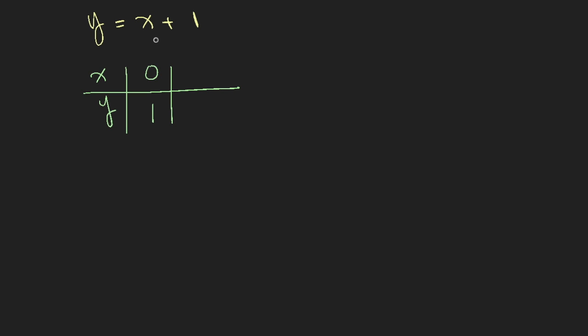And perhaps you put 1 for x, and when x is 1, y is 2. Now to convince yourself that it's a straight line, we can do one more. When x is 2, y is 3. So let's plot this.